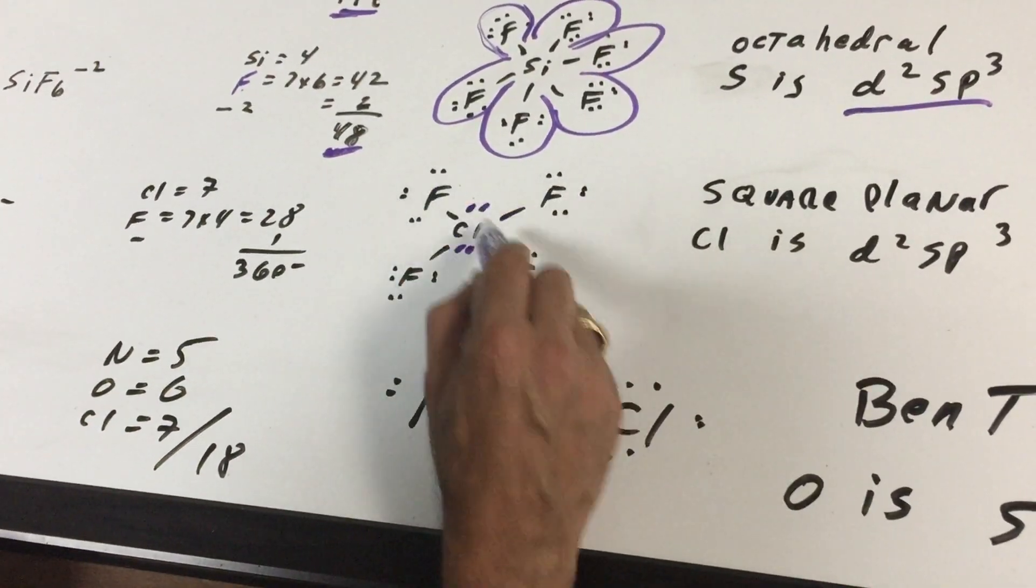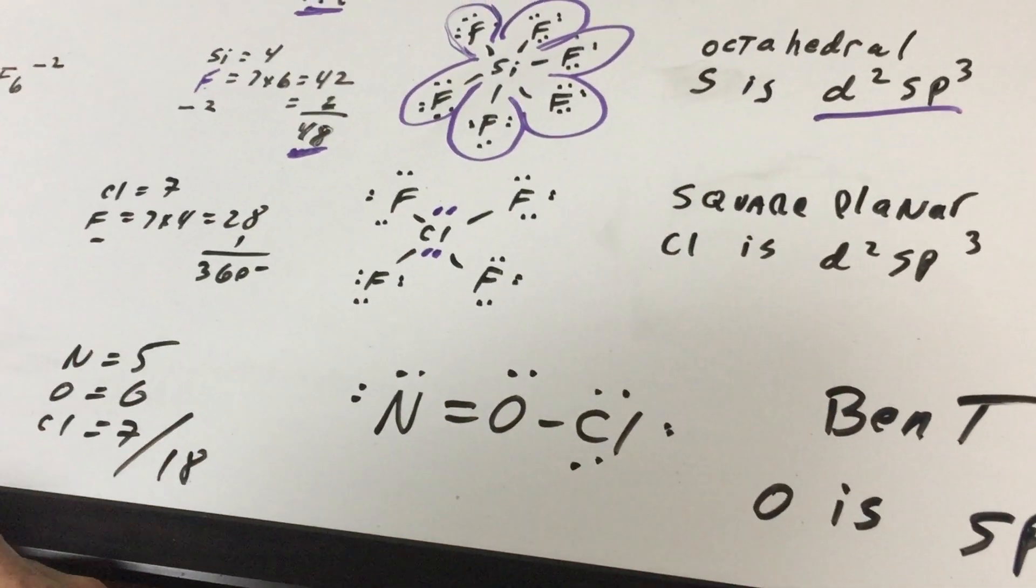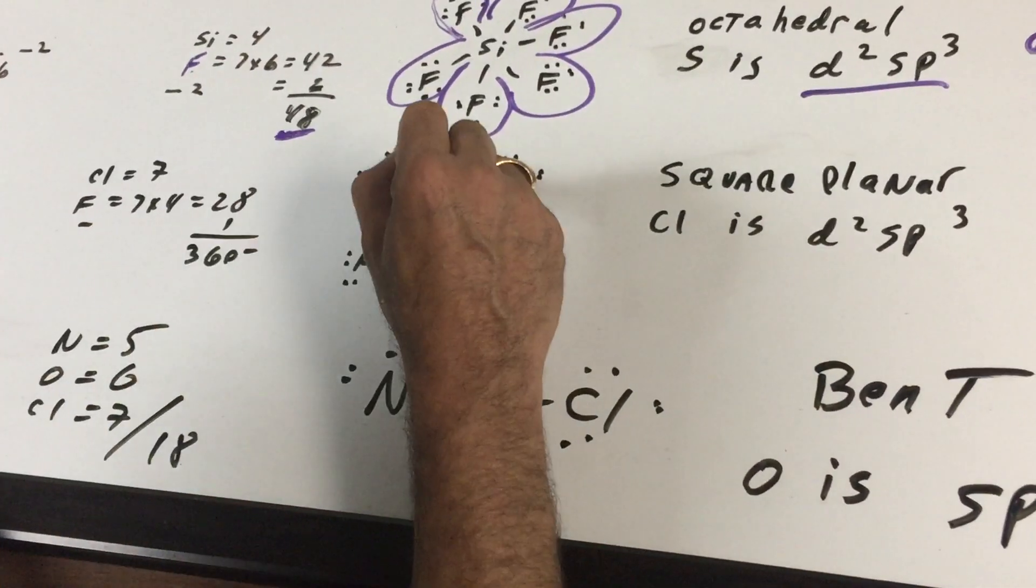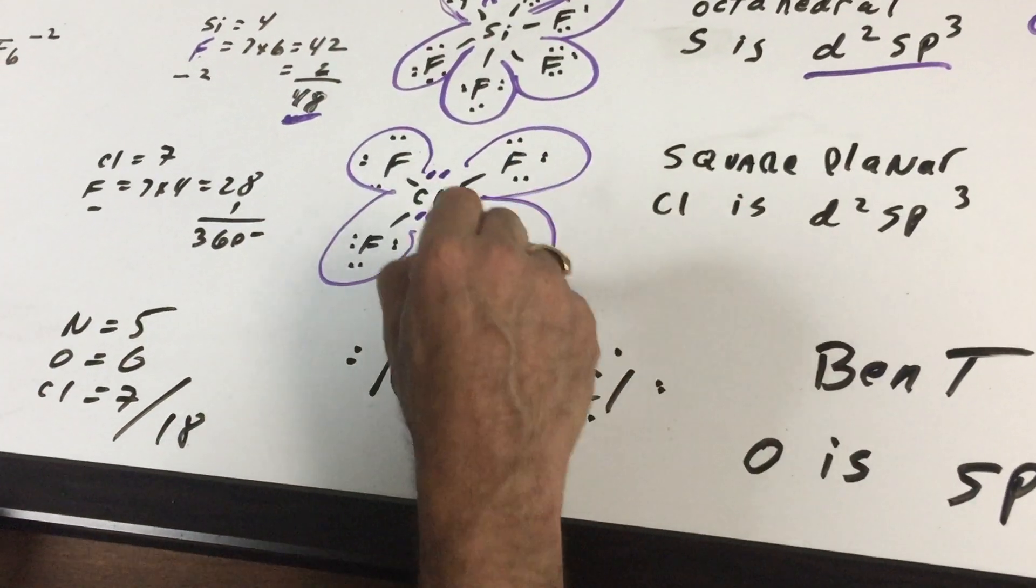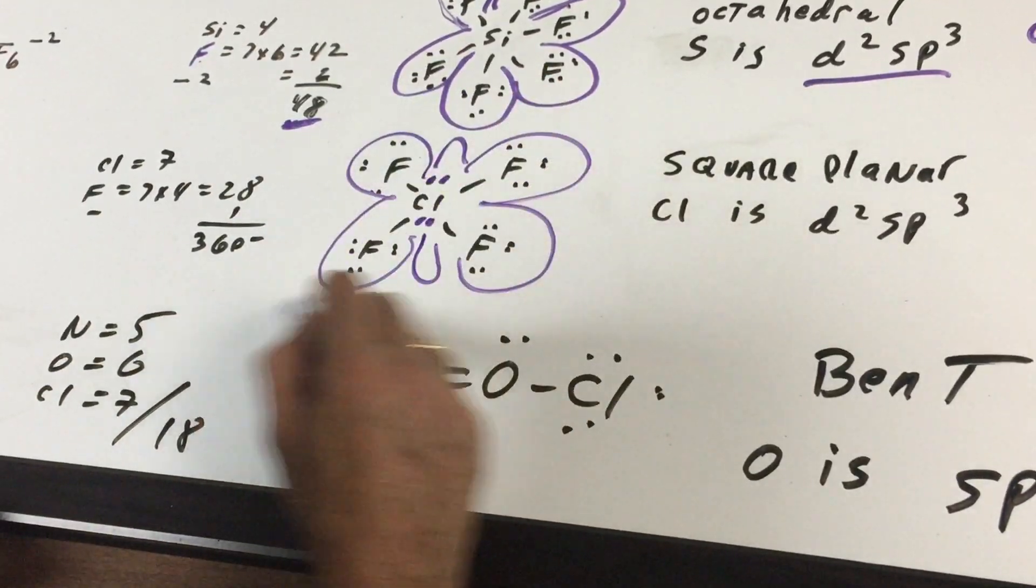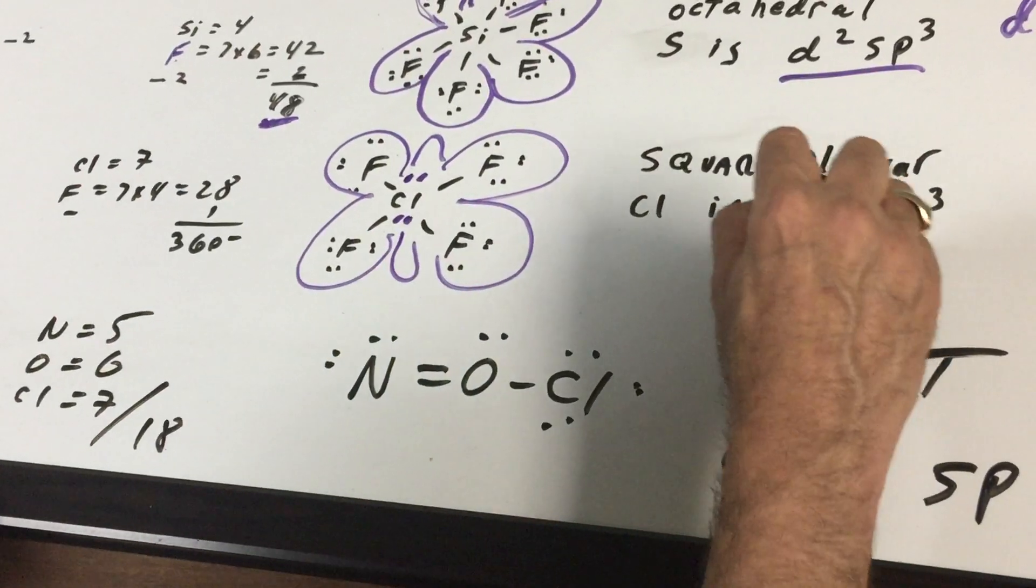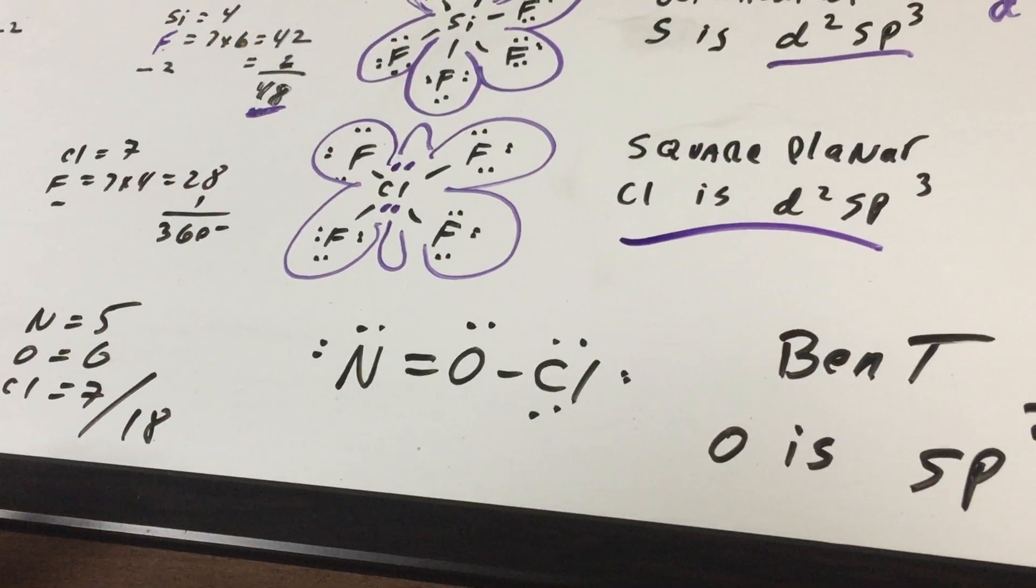Notice that in this example, silicon broke the octet rule and so did chlorine. That's not so unusual to see atoms breaking the octet rule. If you have four areas of space and two lone pairs, the shape is called square planar. And for the hybridization, let's do our little trick. There's a total of six areas of space, so the chlorine would be d2sp3 hybrid.